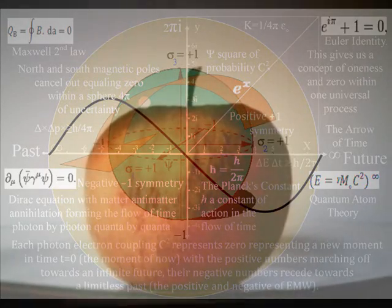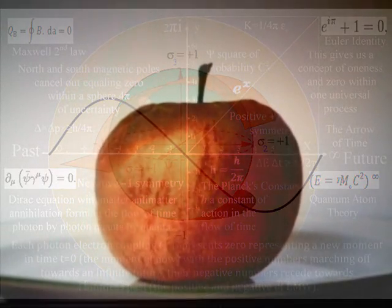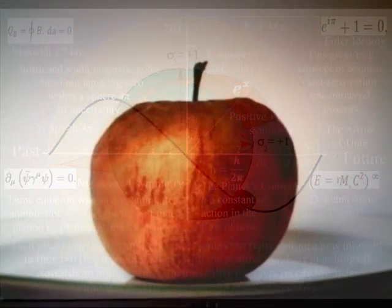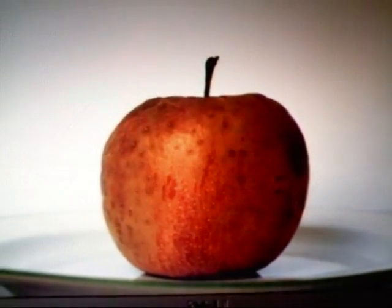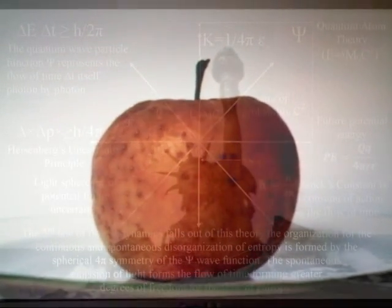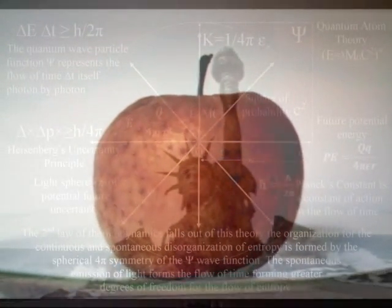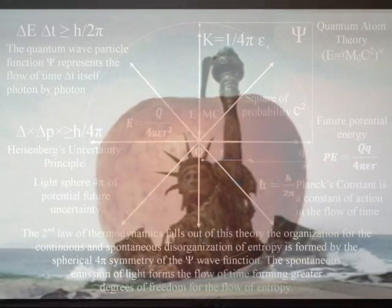As photon energy cascades down, it forms greater degrees of freedom for the increase in entropy, or disorganization, forming the uncertainty of everyday life.